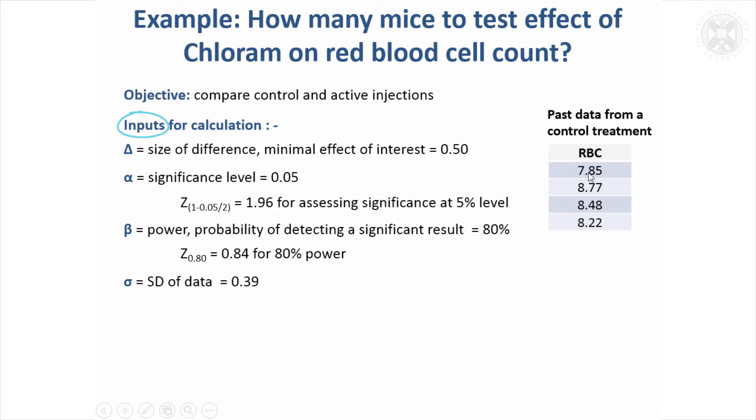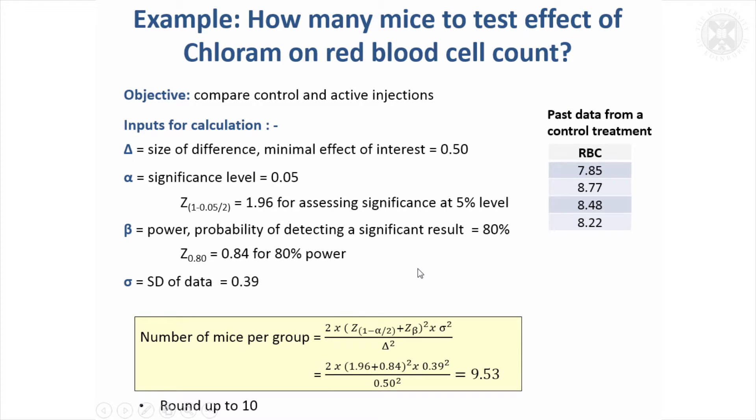Then the variability we'll take from just these four values—our estimate of the standard deviation of the data is 0.39. So that can all go into the formulae. If we put it into that standard formulae I showed,